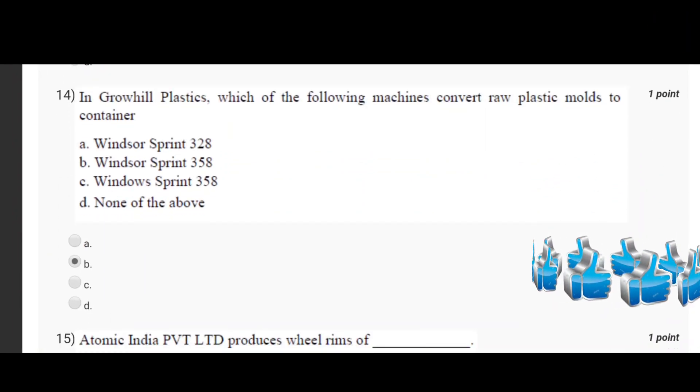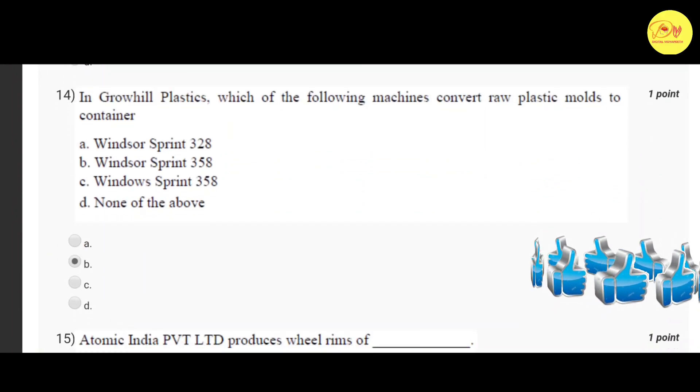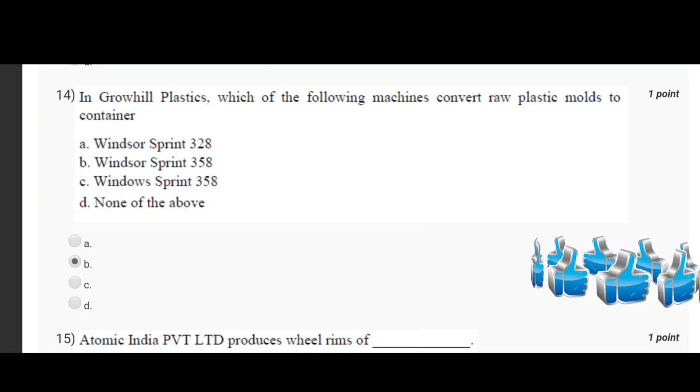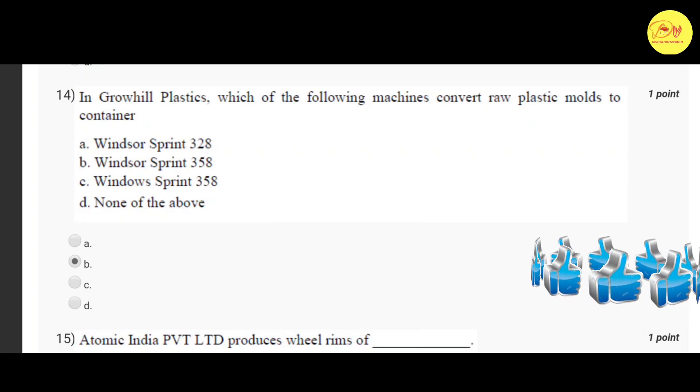Our second last question is in Grohill Plastics which of the following machines convert raw plastic molds to container? Correct option is B, Wind soar sprint 358.